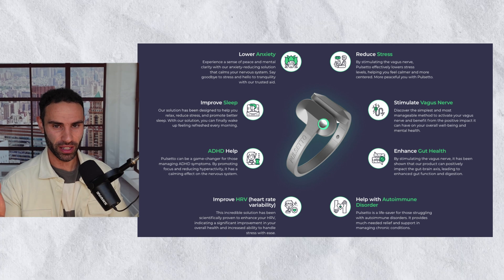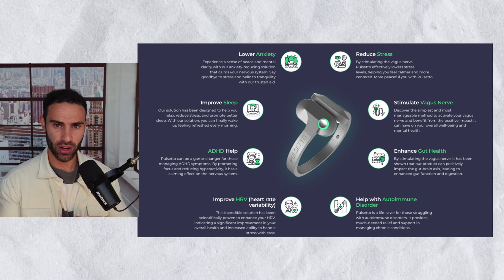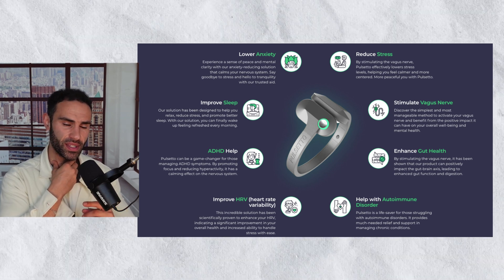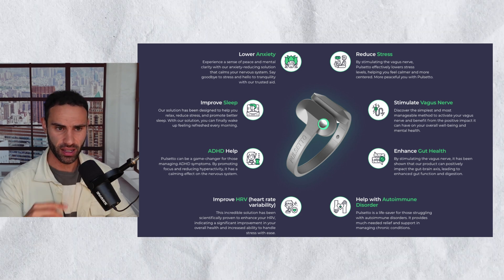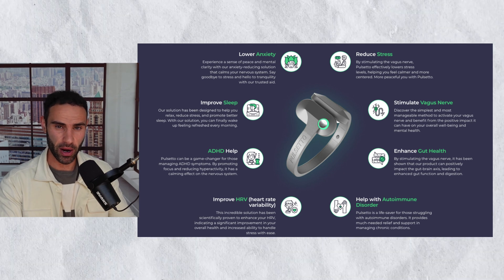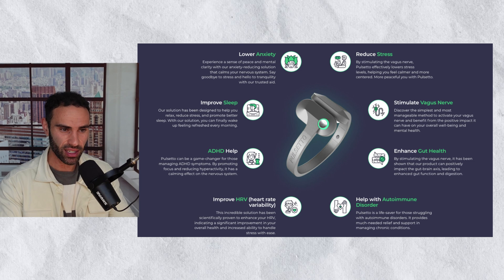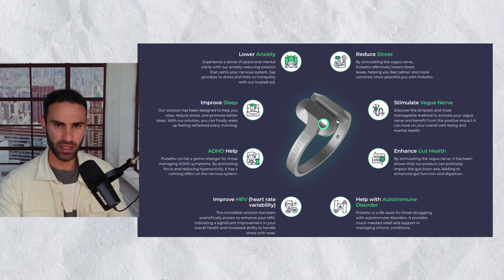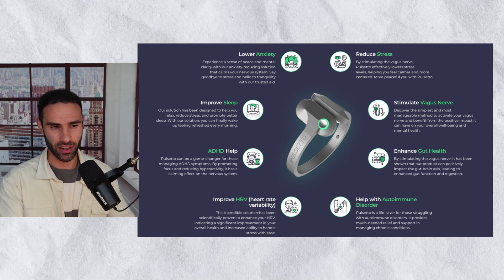When talking about heart rate variability, we can't miss the vagus nerve — the most important aspect of your HRV score. The Pulsetto device sends electrical signals to the part of your neck where the vagus nerve runs. This supports gut health, since the parasympathetic nervous system aids digestion. It may also help with autoimmune disorders, improve HRV, assist with ADHD, improve sleep, reduce cortisol, and improve melatonin response, thus enhancing sleep capacity and efficiency.